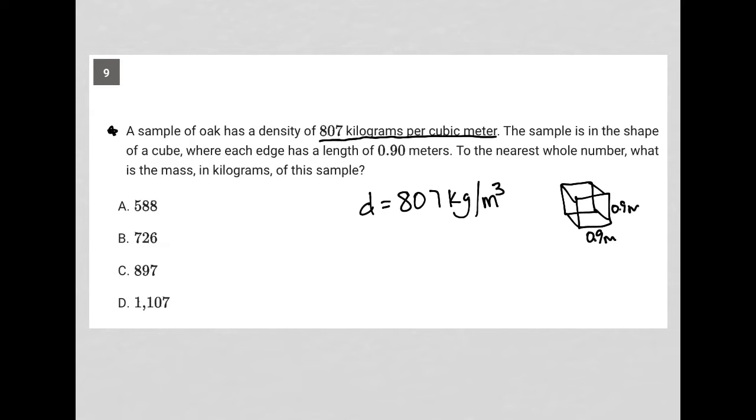So I have a length, a width, and a height that are all 0.9. To the nearest whole number, what is the mass in kilograms of this shape? Okay, so the question is how does density relate to this cube here?